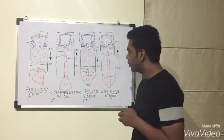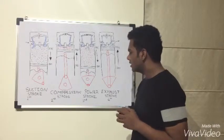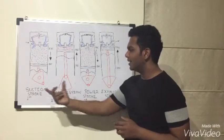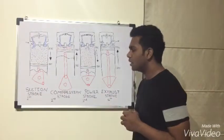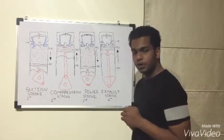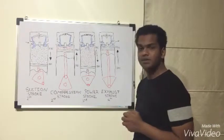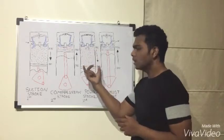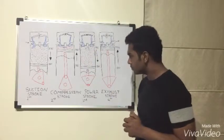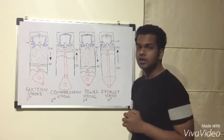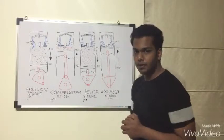Coming up towards the third stroke which is the power stroke. This is the only working stroke in the entire cycle. During this stroke, due to the combustion, the piston has been pushed from the TDC towards the BDC. Both the valves stay shut during this stroke.